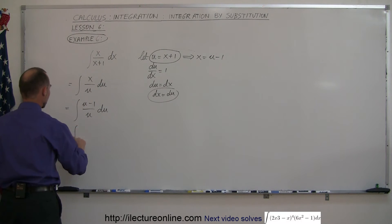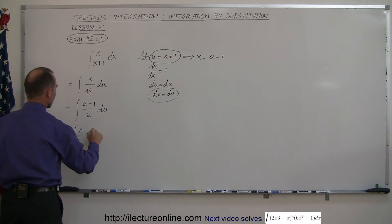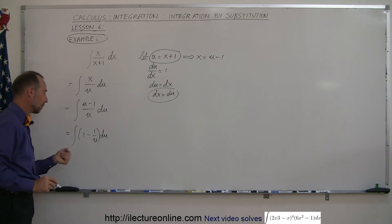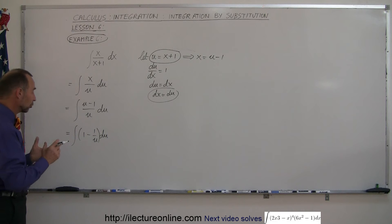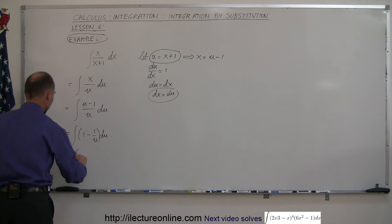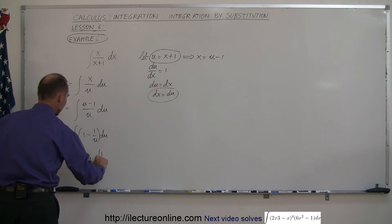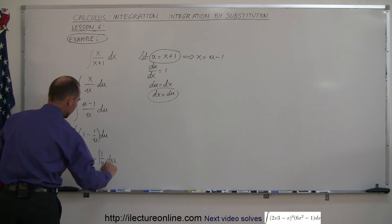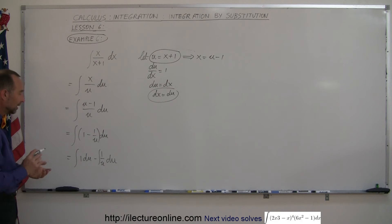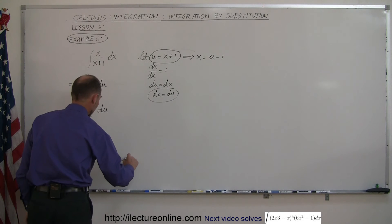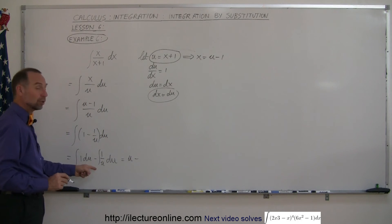Now you can divide the denominator into the numerator. If you do that, this is equal to the integral of u over u — which is 1 — minus 1 over u, du. This is kind of like a polynomial, so we can separate that into two integrals: the integral of 1 du minus the integral of 1 over u du.